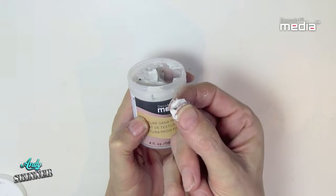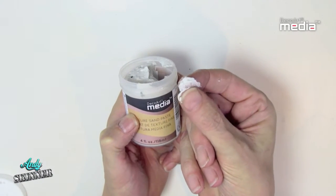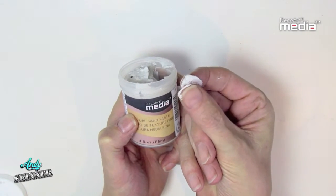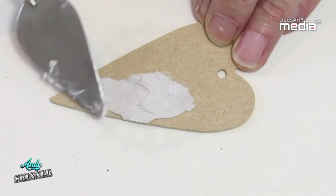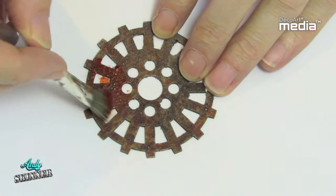Texture Sand Paste is an ultra fine grit texture paste that can be used to create textural and dimensional finishes. It can be applied with a stiff brush or a palette knife to build up texture. It can also be painted and sanded once dry.